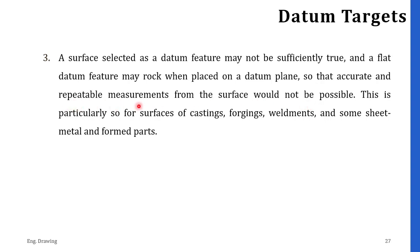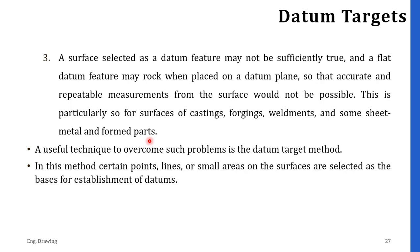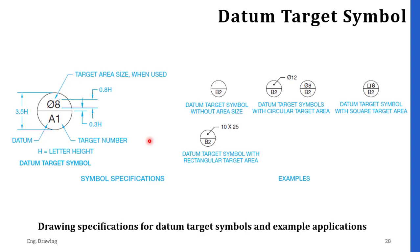This is particularly so for surfaces of castings, forgings, weld elements, and some sheet metal and formed parts. The datum target is a technique used to overcome such problems. In this method, certain points, lines, or small areas of the surfaces are selected as the base for establishing a datum. It is not necessary to use targets for all datums. Here you can see the drawing specification for the datum target symbol and some example applications.